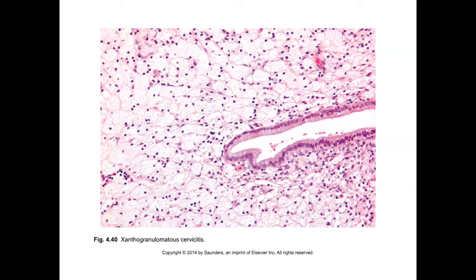When the inflammatory pattern is more histiocytic and foamy, we use the term xanthogranulomatous cervicitis. These are xanthoma cells indicating lipid material within the cytoplasm. This may be related to lipid metabolism disorders or exposure to a lipid-rich reagent, herbal remedy, or similar, but should not be confused with clear cell carcinomas, signet ring cell carcinomas, or those sorts of entities.